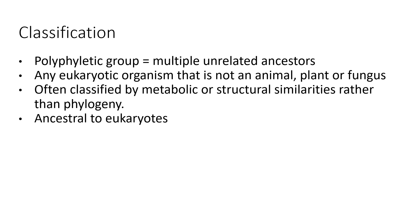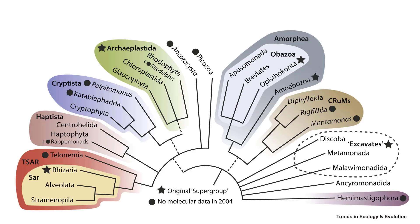So any eukaryotic organism that's not an animal, plant, or fungus, we just throw into this group called protists. They're often classified by their metabolic or structural similarities rather than phylogeny. However, we do know that they're ancestral to the other eukaryotes. Here's one example of a phylogenetic tree, and notice the dashed lines indicate we really just don't understand how these are related — lots of questions still to discover.